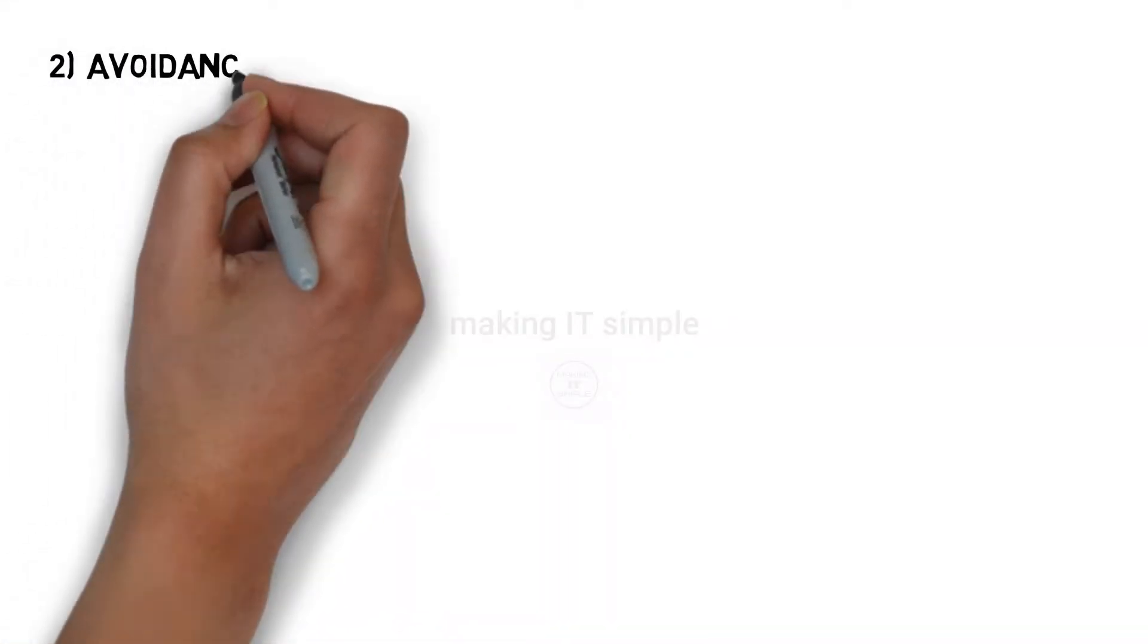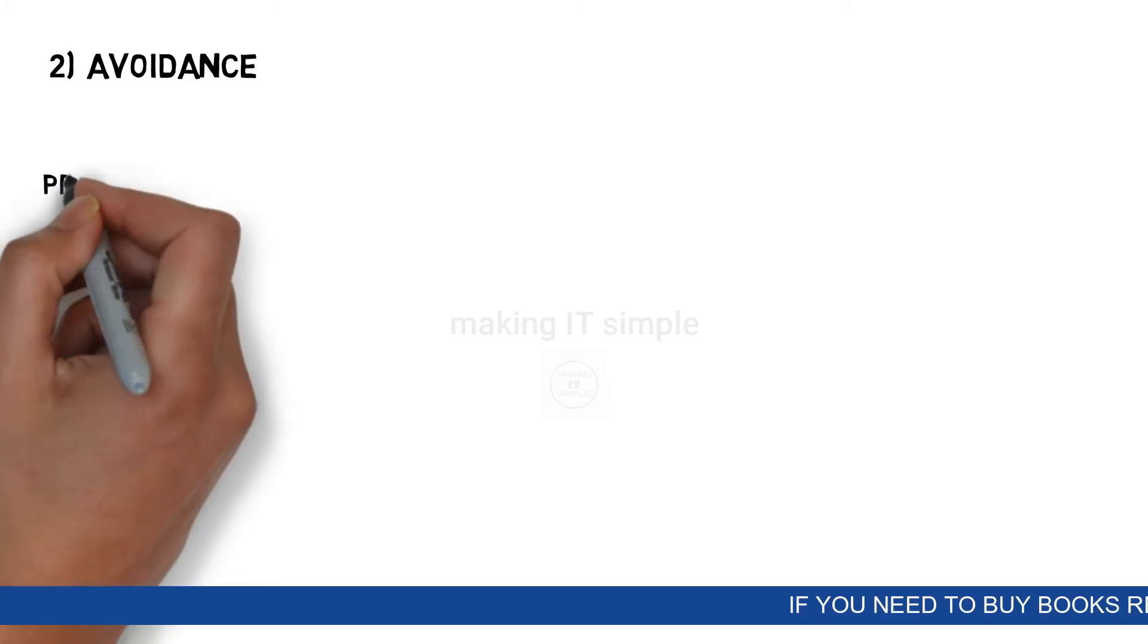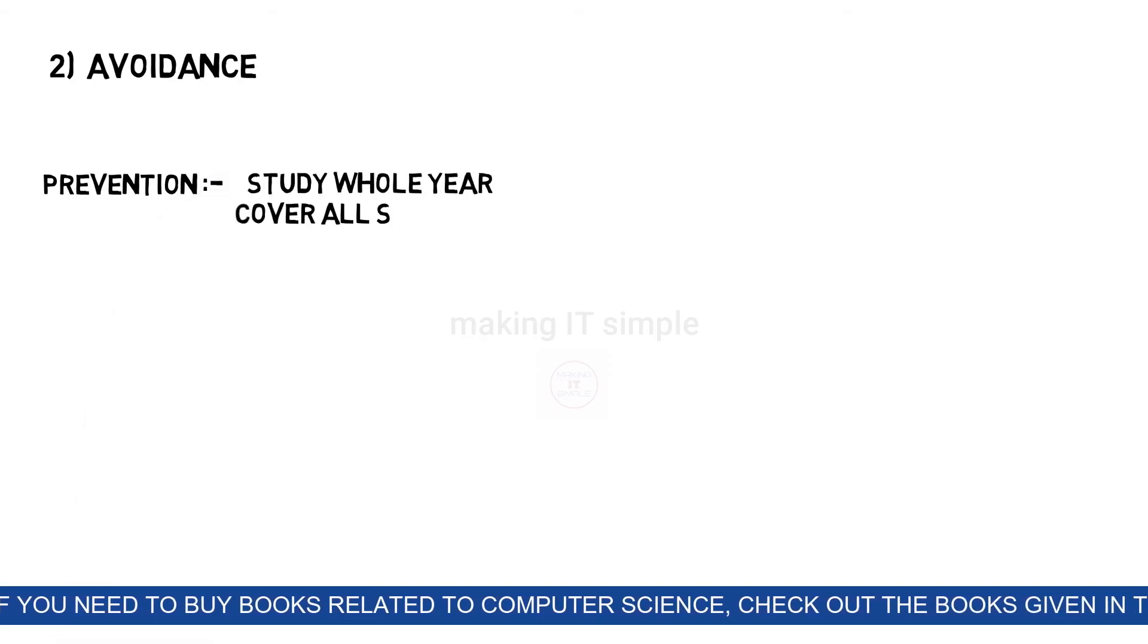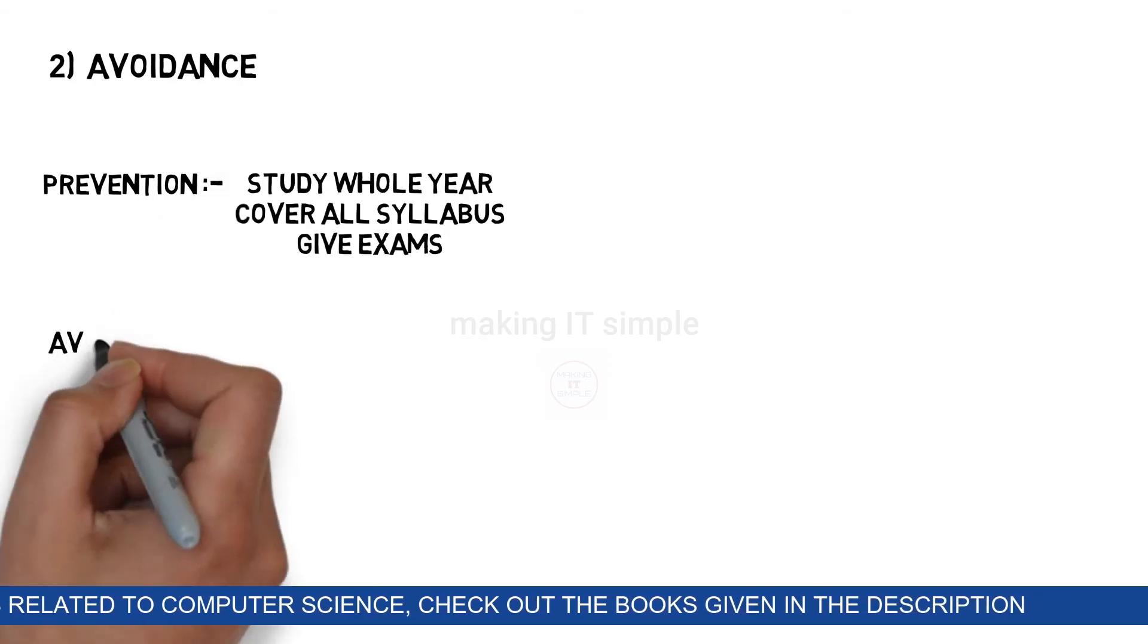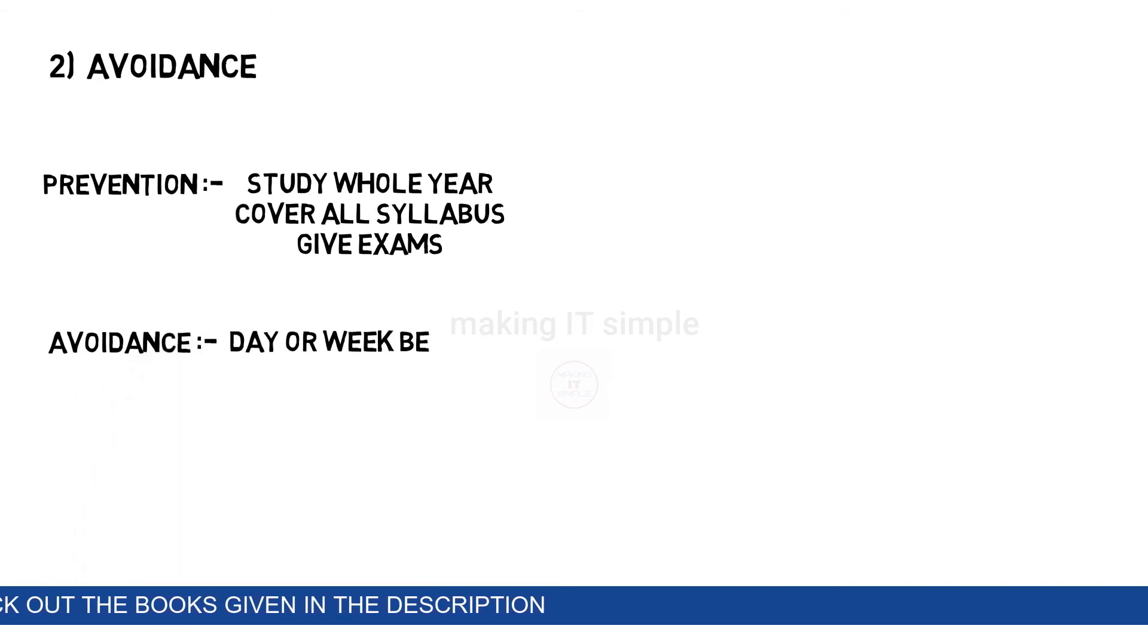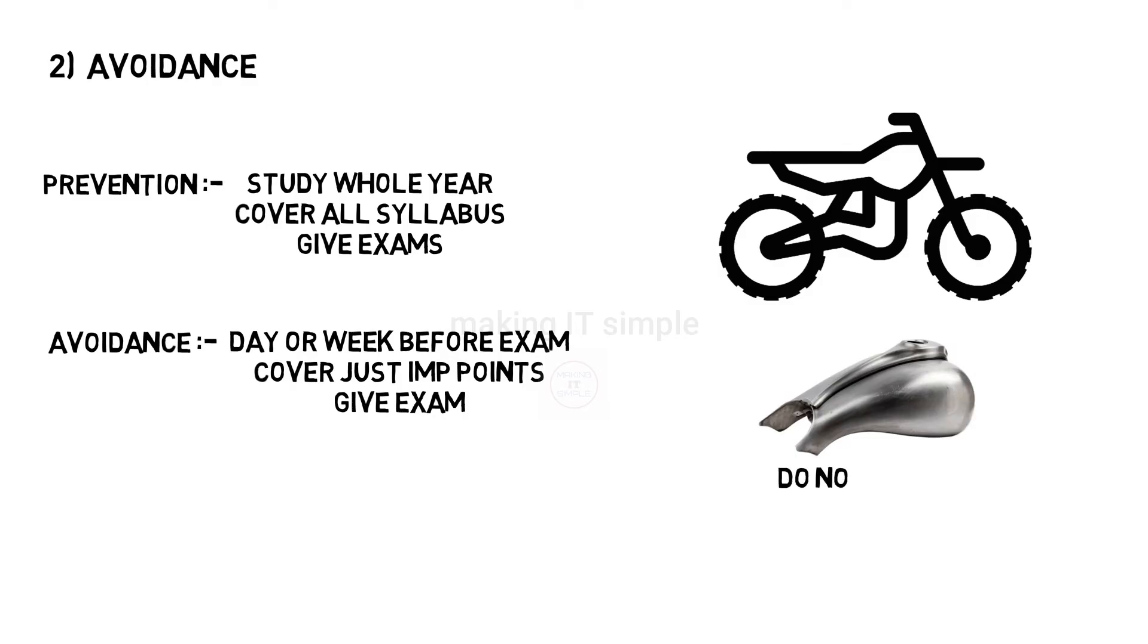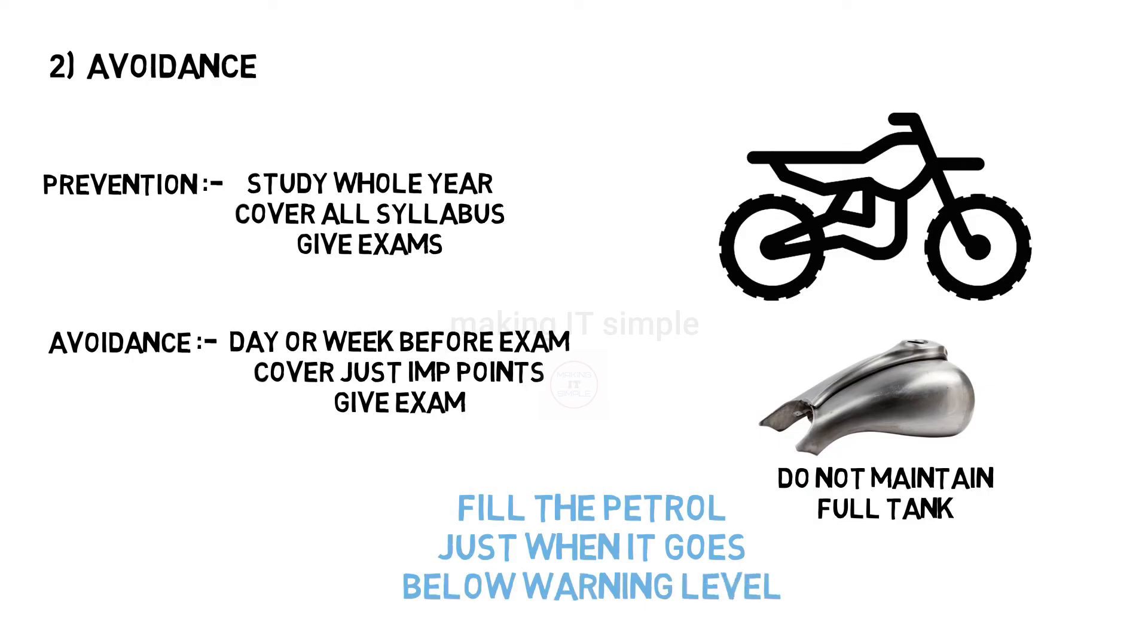Second approach is avoidance. In this approach you just try to avoid the situation at the last moment. For example, prevention approach is like you study the whole year and cover the whole syllabus and give exams. While avoidance approach is you study just the day or week before exam and only cover the important points. Let us consider the previous example of bike. You do not maintain a full petrol tank, but just fill the petrol when petrol level goes below warning level or reserve, avoiding the problem at the final moment.